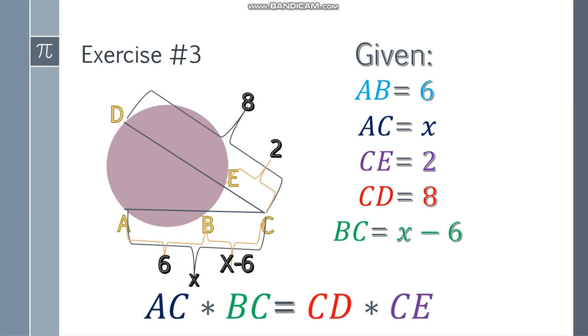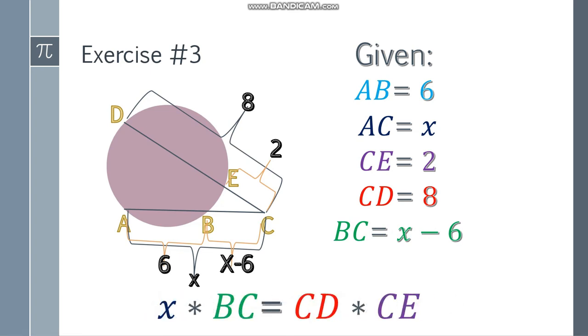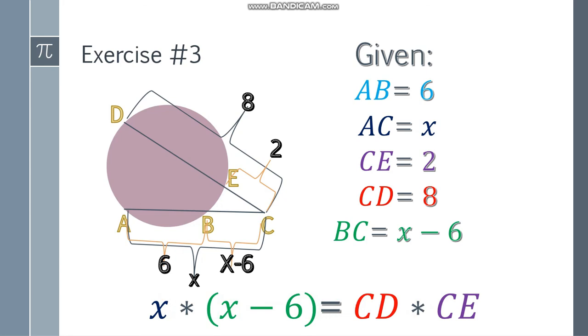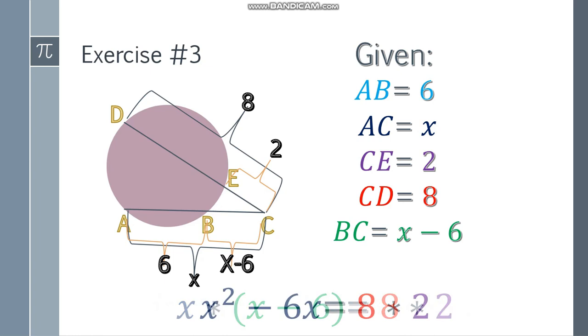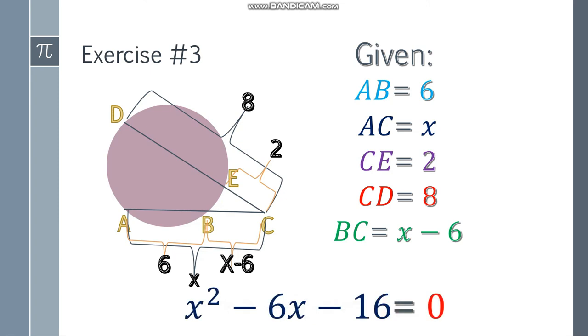Since we have everything, let's use the formula. AC is x, BC is x minus 6, CD is 8, and CE is 2. Simplifying: x times the quantity x minus 6 equals x squared minus 6x. 8 times 2 equals 16. We get a trinomial. Move 16 to the other side: x squared minus 6x minus 16 equals 0. Factor that: x minus 8 times x plus 2. The values of x are positive 8 and negative 2.